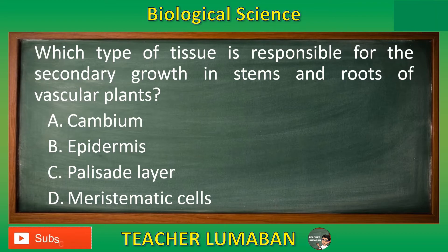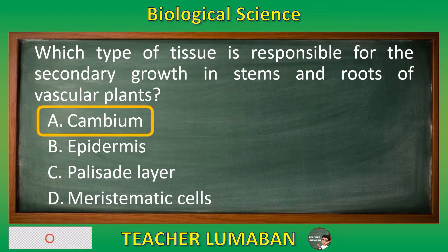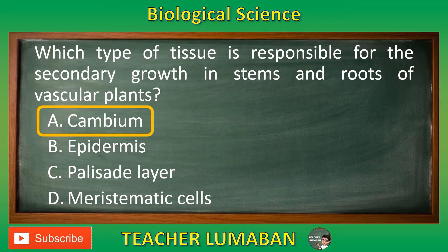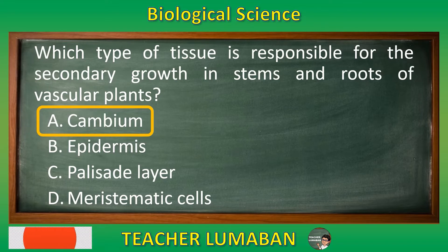The correct answer is Letter A: Cambium. The cambium is a type of tissue responsible for the secondary growth in stems and roots of vascular plants.